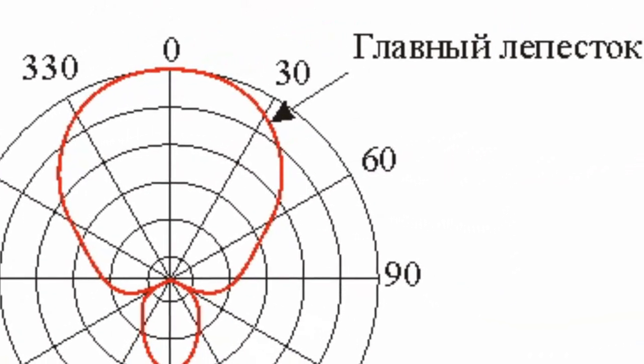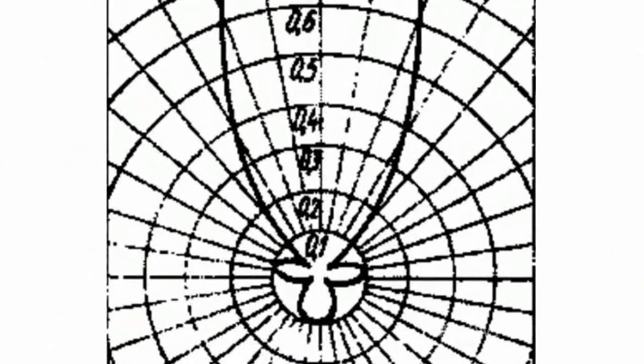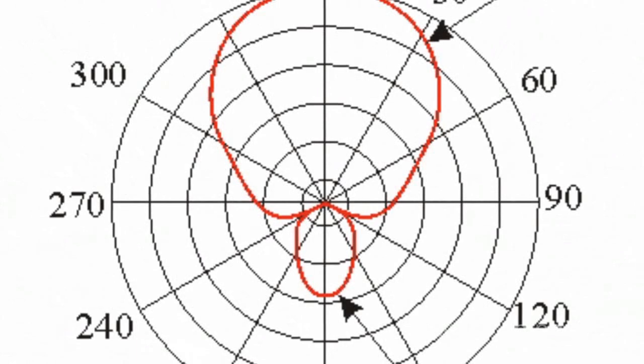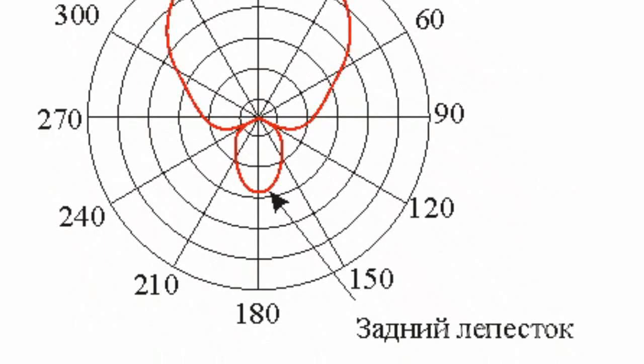The corresponding lobe is called the main lobe, the rest of the lobes are the side lobes, and the lobe representing radiation in the direction opposite to the main direction is called the back lobe of the antenna directional diagram.